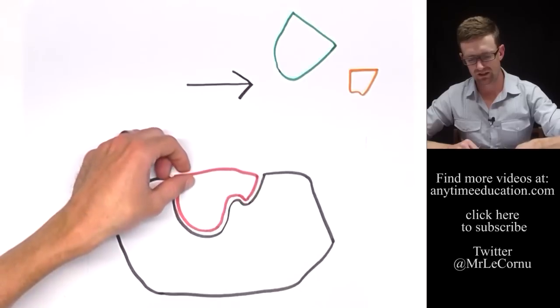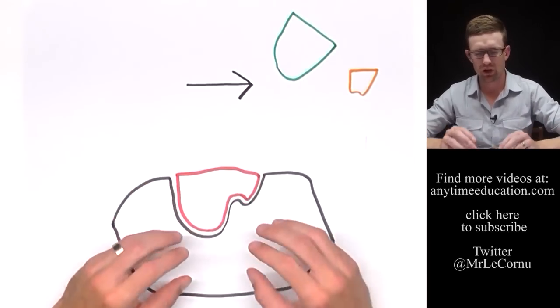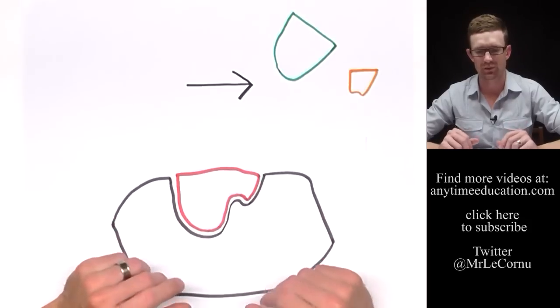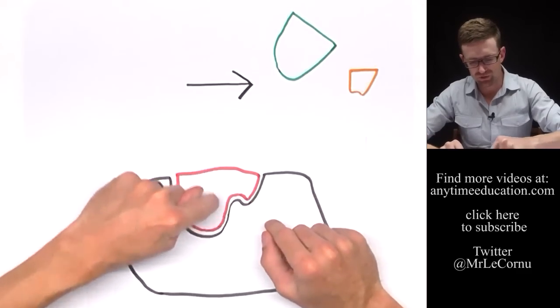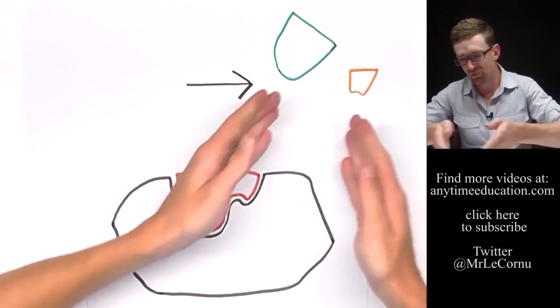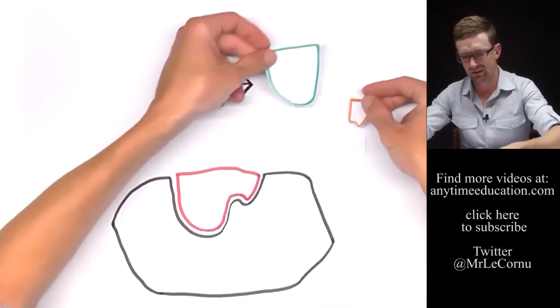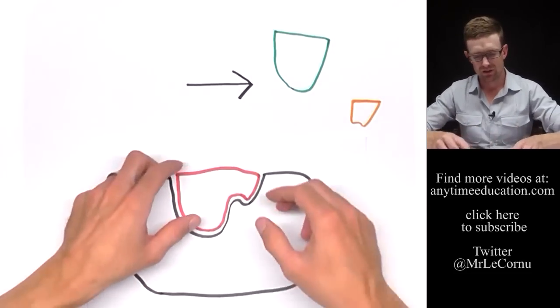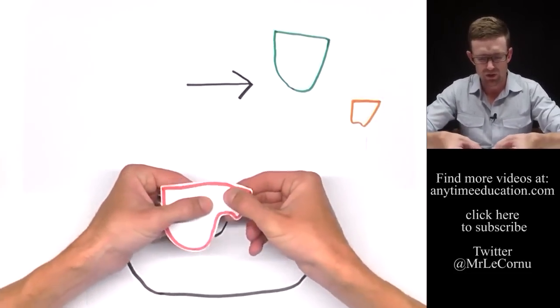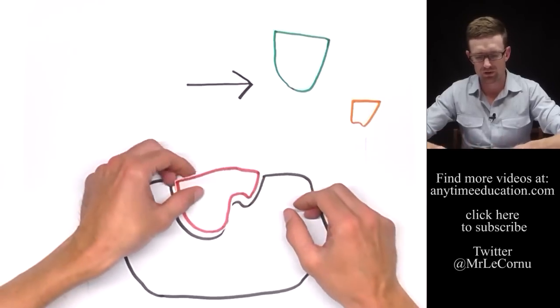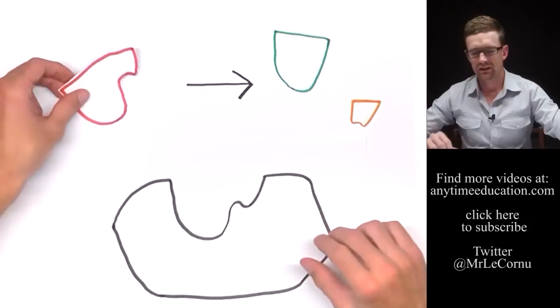Now this substrate fits into the active site of the enzyme. And how the enzyme would lower the activation energy for this particular reaction is by putting pressure on the bonds of this molecule and breaking it down into our two products. The products are then released and the chemical reaction has occurred. So we're lowering the activation energy in this example by putting pressure on those chemical bonds and breaking the substrate down into the products.